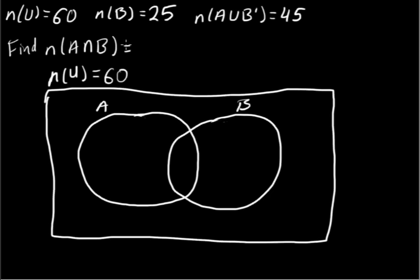And what we're going to do is use shading. We already know there's 25 elements in B, so I'm going to go ahead and shade B with this blue.